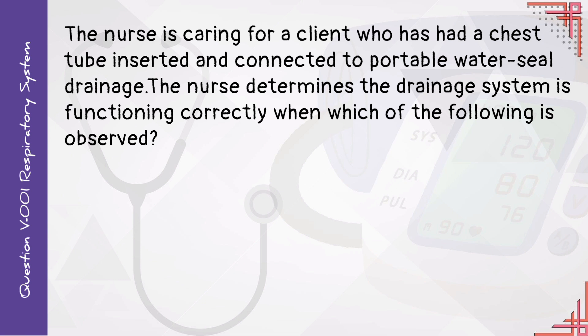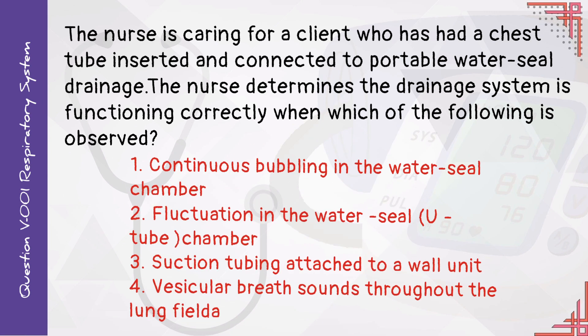The nurse is caring for a client who has had a chest tube inserted and connected to a portable water seal drainage. The nurse determines the drainage system is functioning correctly when which of the following is observed? One: continuous bubbling in the water seal chamber. Two: fluctuation in the water seal tube chamber. Three: suction tubing attached to a wall unit. Four: vesicular breath sounds throughout the lung fields.